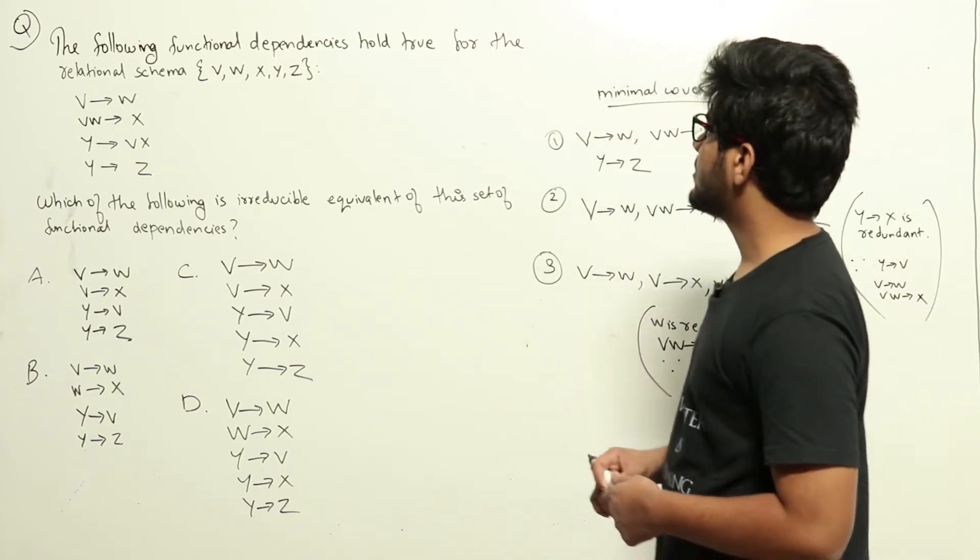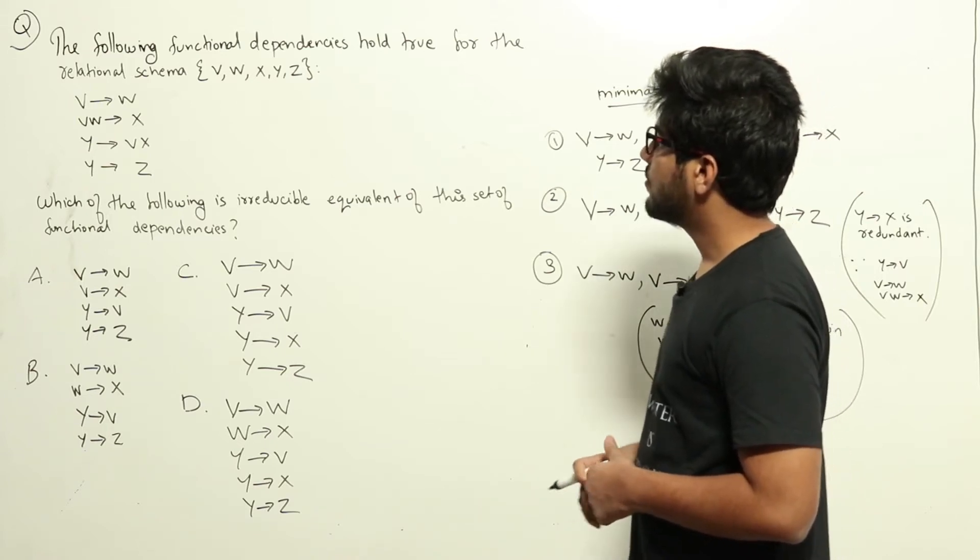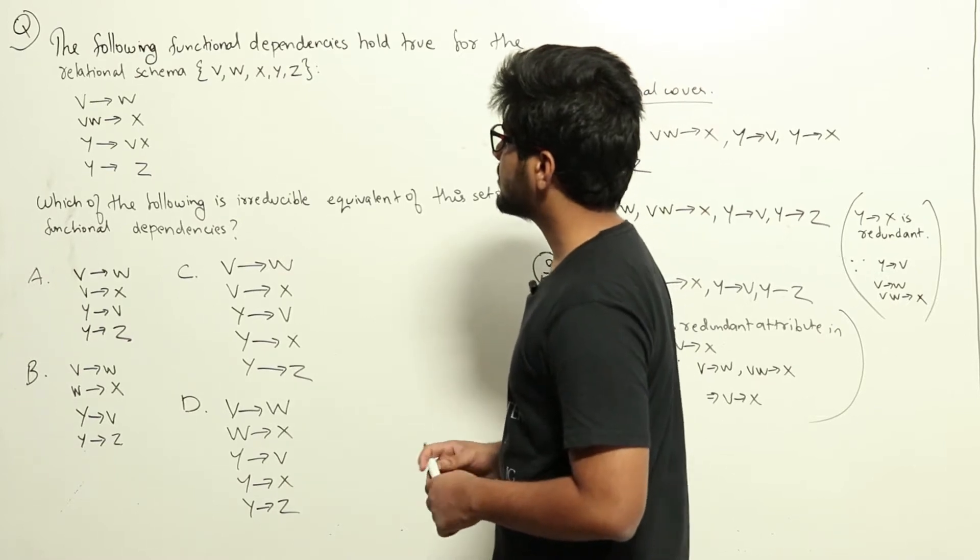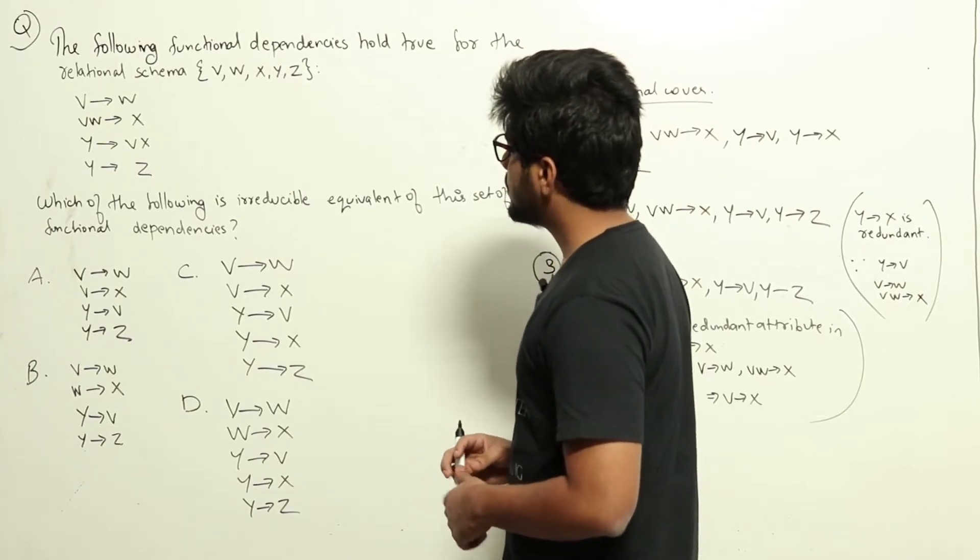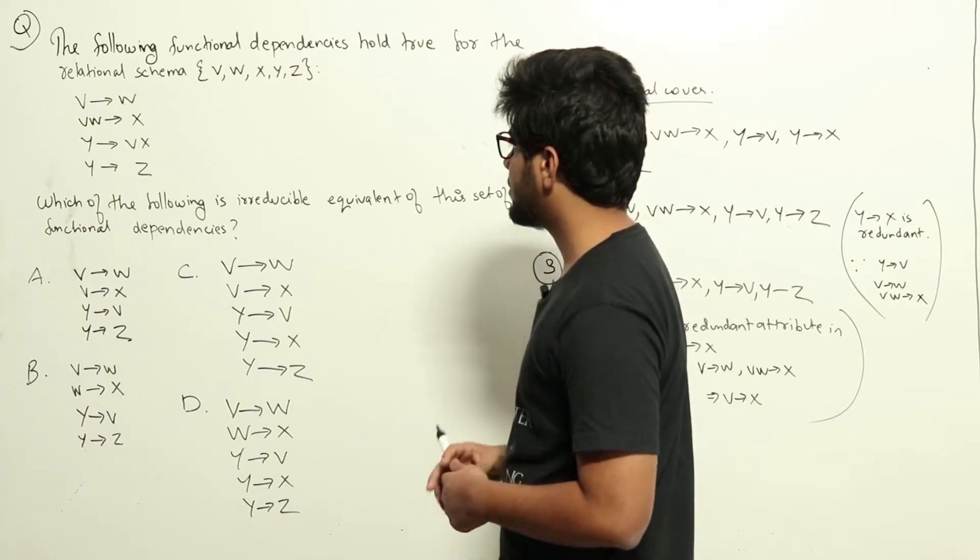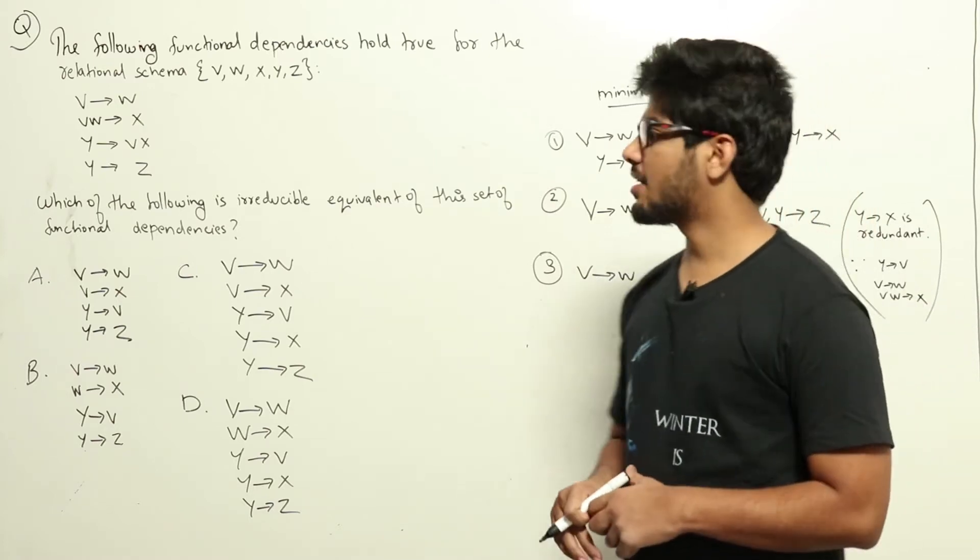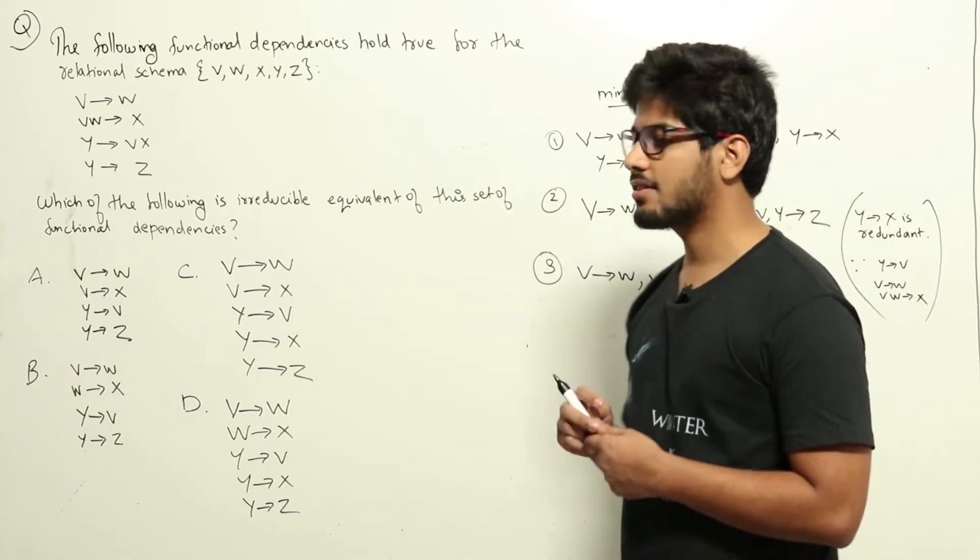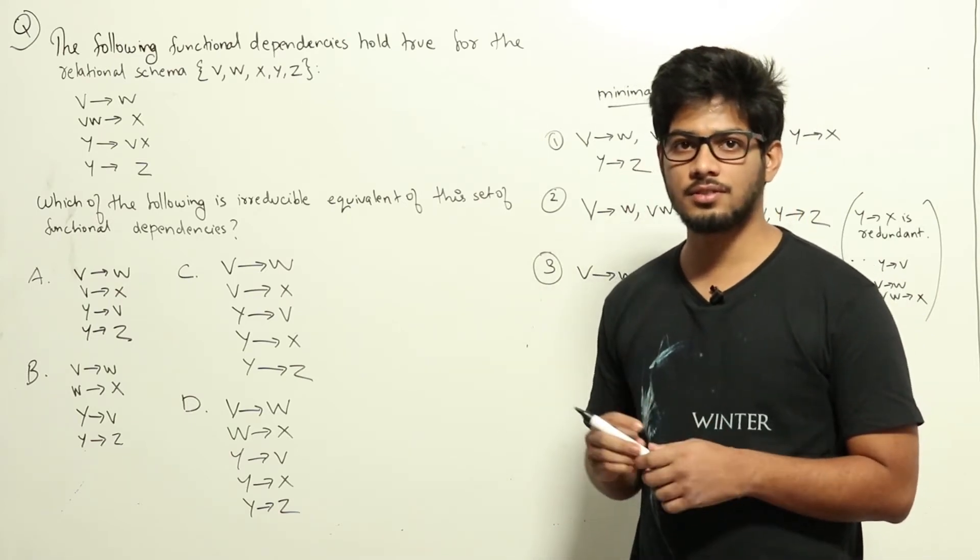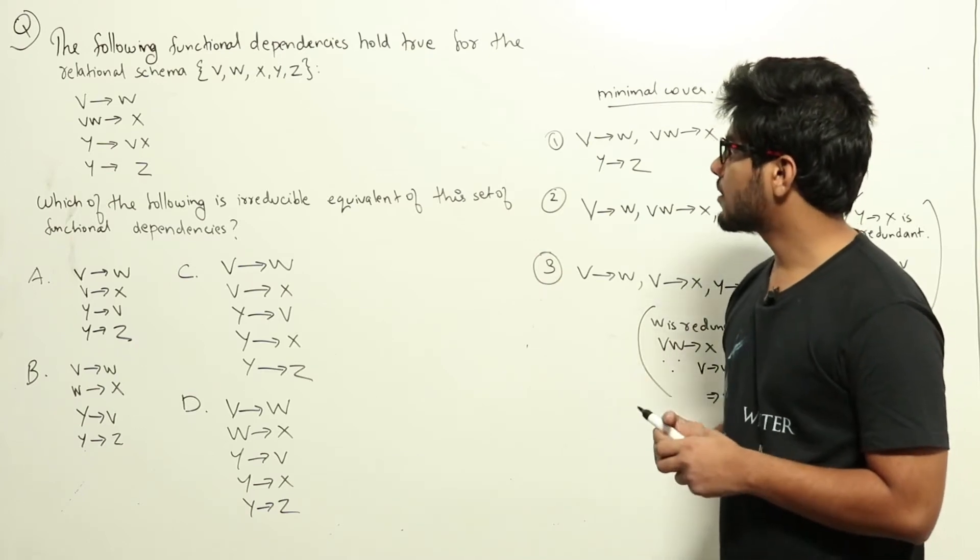The following functional dependencies hold true for the relational schema VWXYZ: V gives W, VW gives X, Y gives VX, Y gives Z. Which of the following is an irreducible equivalent of this set of functional dependencies? This is a question from database management systems. If you don't understand what functional dependencies are, please refer to the video lectures for this topic to gain a better understanding.